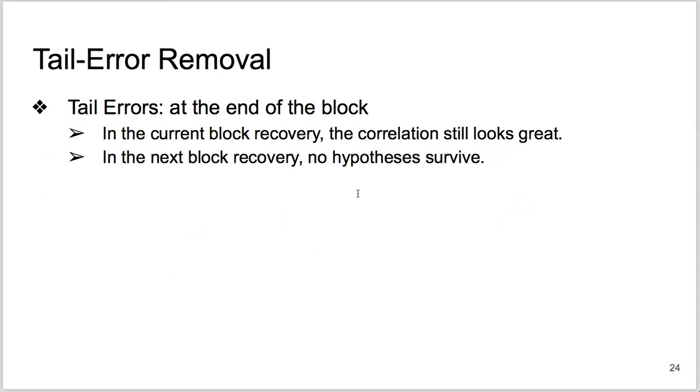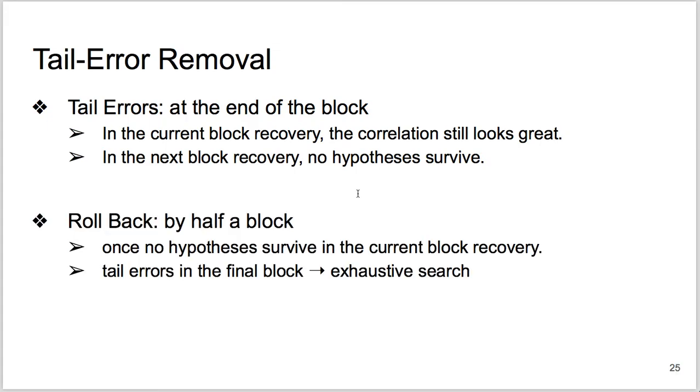Unfortunately, some private key coefficients at the end of the block may go wrong. In the current block recovery, they are related to very few intermediate states. So they can lead to better correlation due to the noise. In the next block recovery, the initial intermediate state must be wrong. So no hypothesis, not even the correct one, can lead to a good correlation. No survivors, and attack fails. Luckily, no survivors in the current block recovery also signals the tail errors in the last block recovery. And we can roll back by half a block to correct tail errors. They are now right in the middle of the current new block.